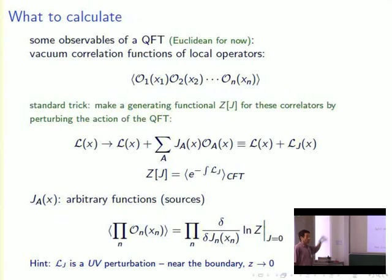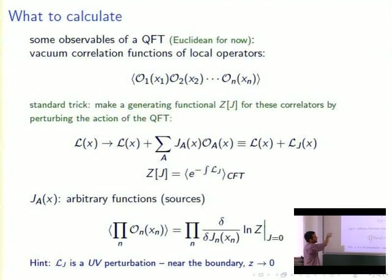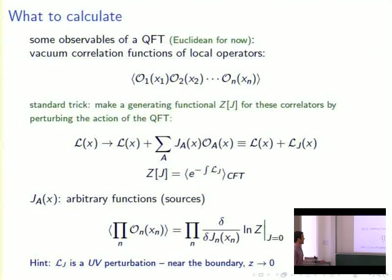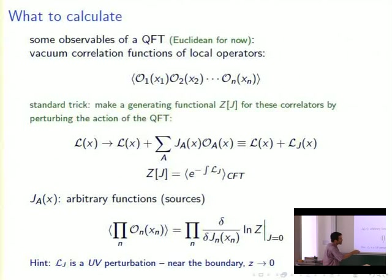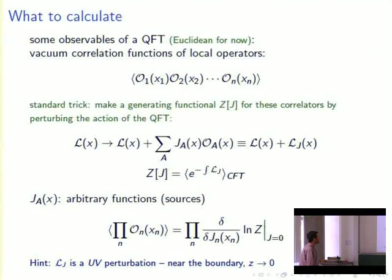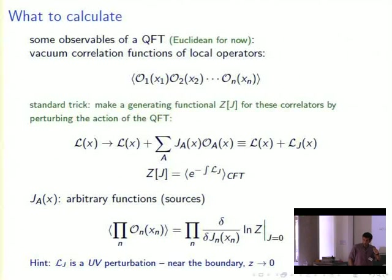A good thing to calculate in a quantum field theory are correlation functions in the vacuum of local operators. We can compute them all at once by computing a generating functional: add to our Lagrangian a sum over operators we want to study with sources j that we get to pick. Ideally we'd compute this expectation value for every value of j, differentiate with respect to j, and compute the correlation functions. A hint about the dictionary: the source j is a UV perturbation, so it should do something near the boundary of spacetime at z=0.